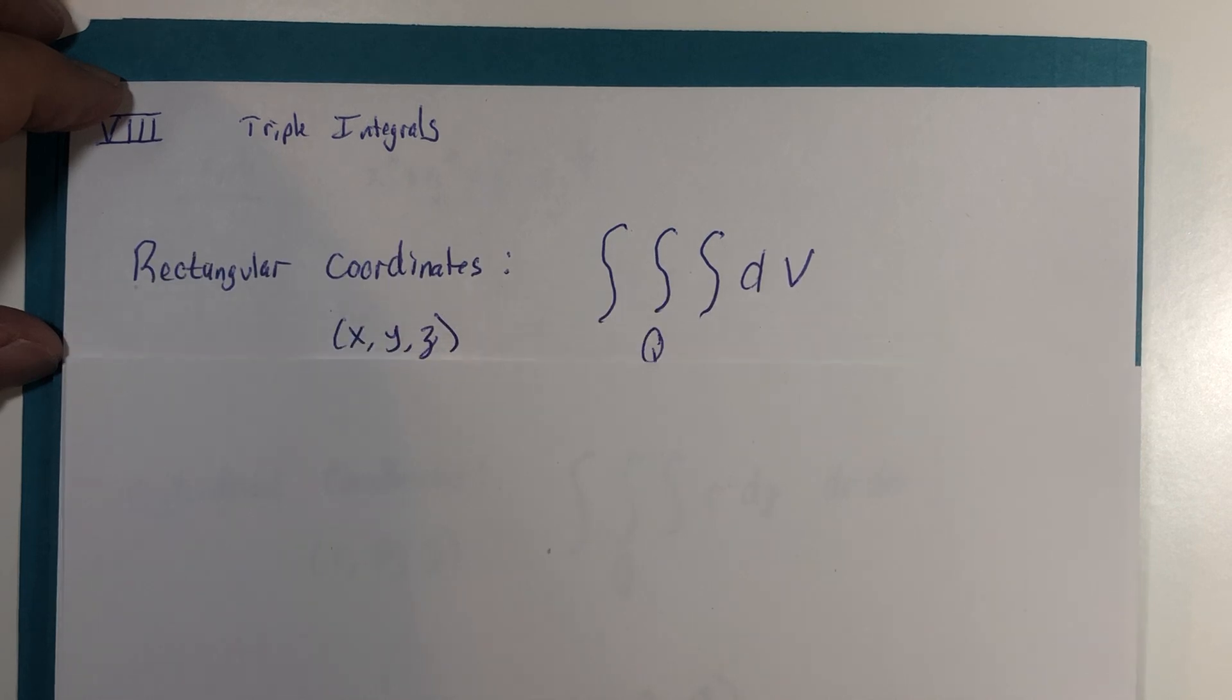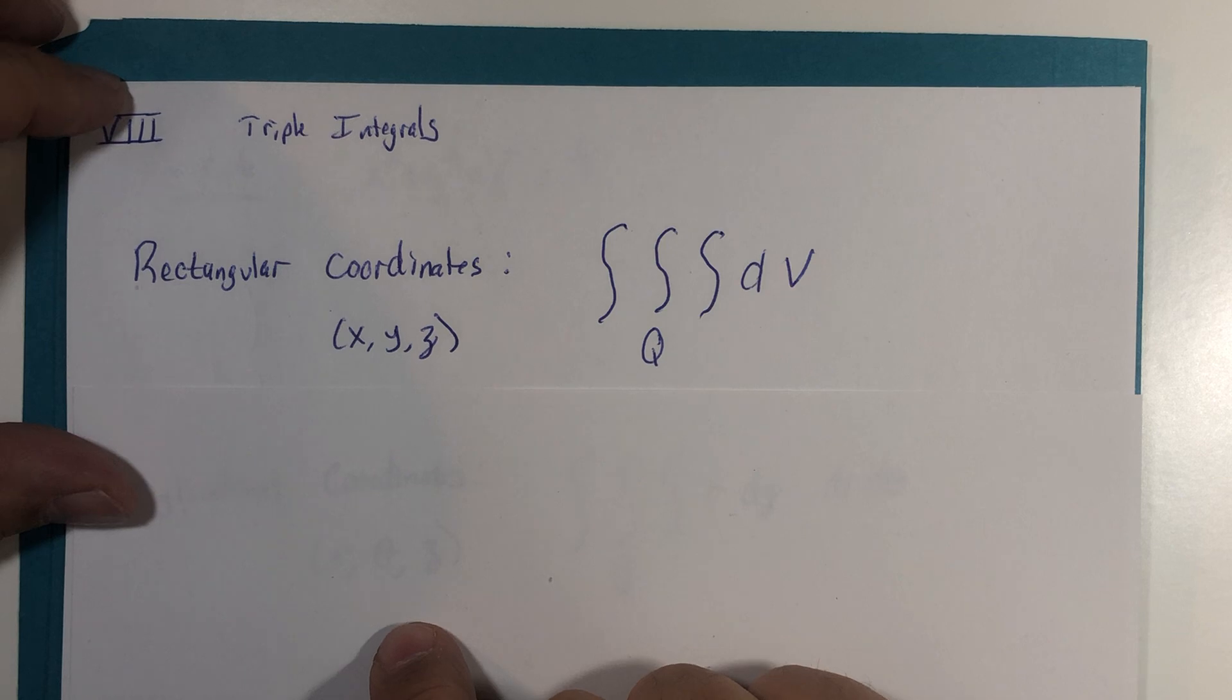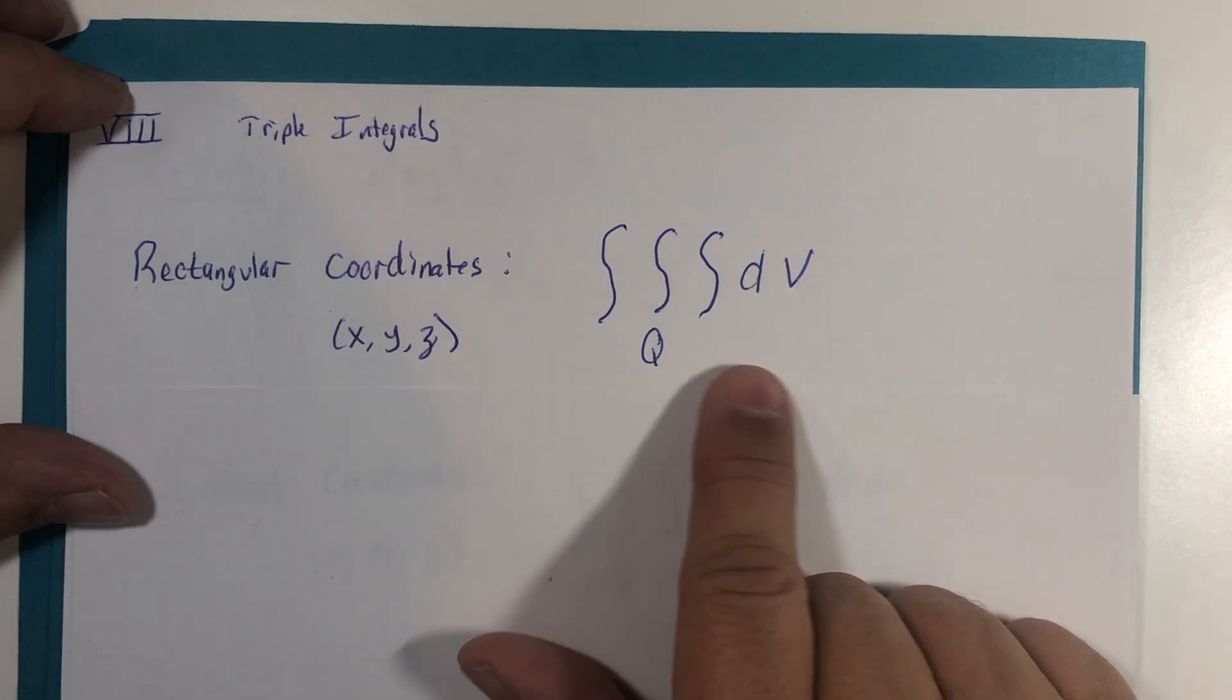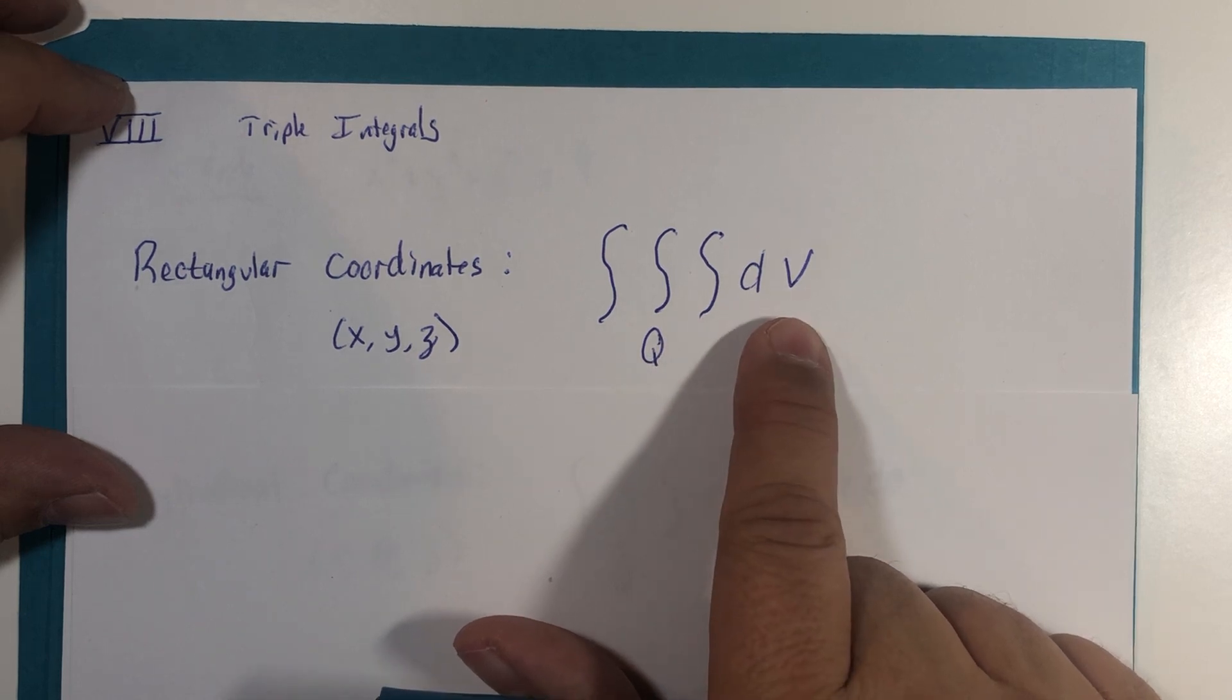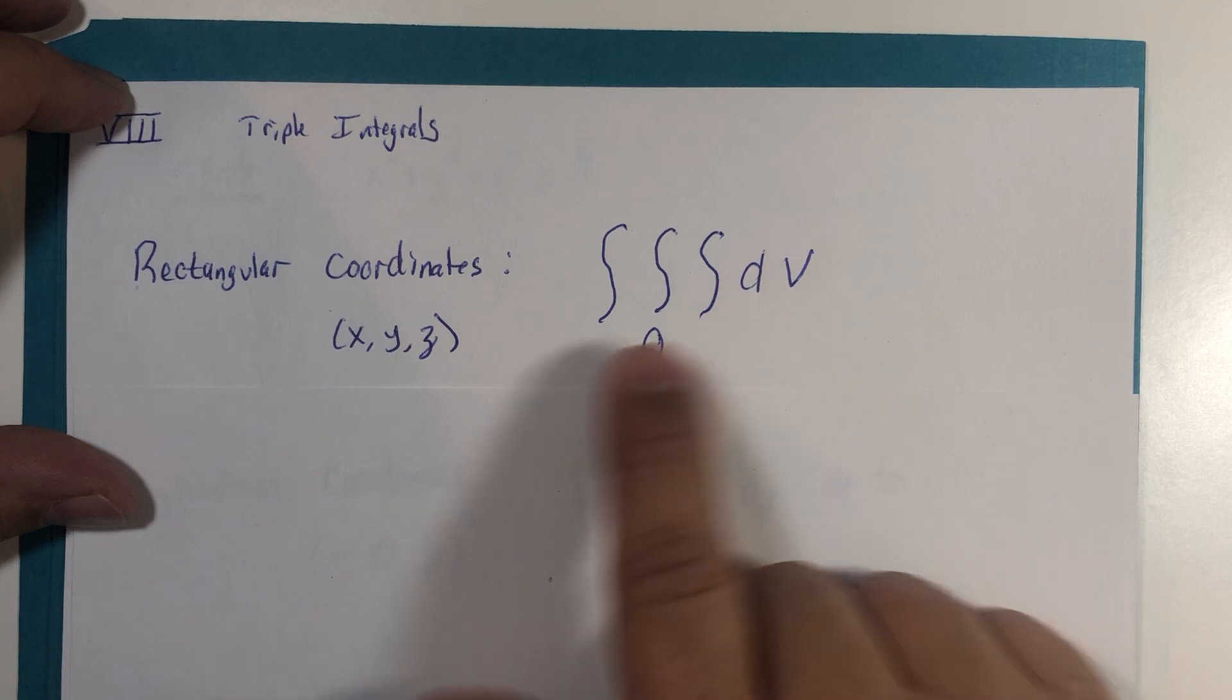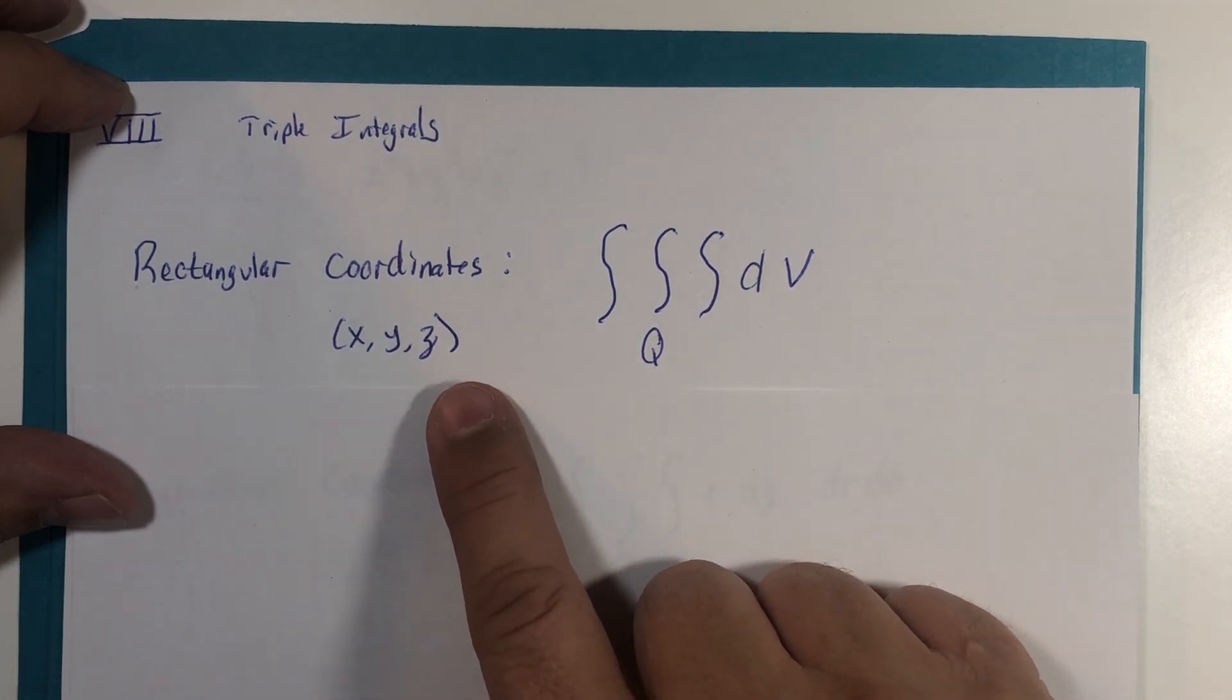Alright, let's see what we've got right now with regards to triple integration. We have triple integrals in rectangular coordinates, and this would be a calculation for volume. If there's no function here, we would assume volume, and the dv component would be in terms of x's, y's, and z.